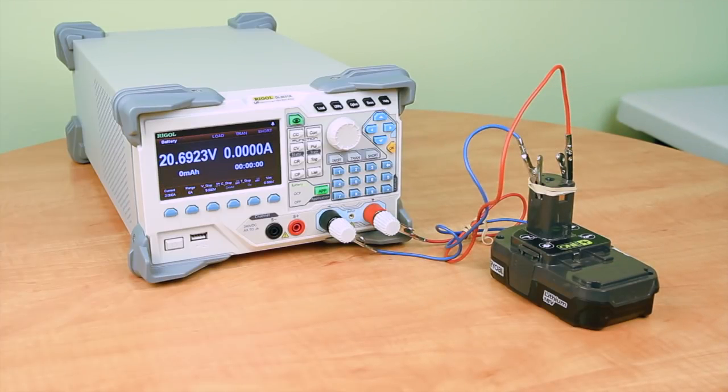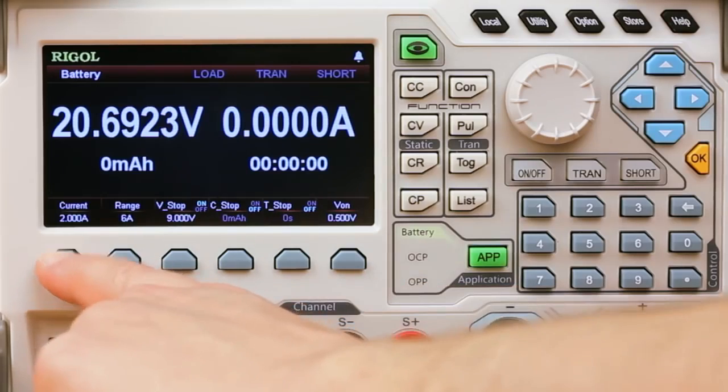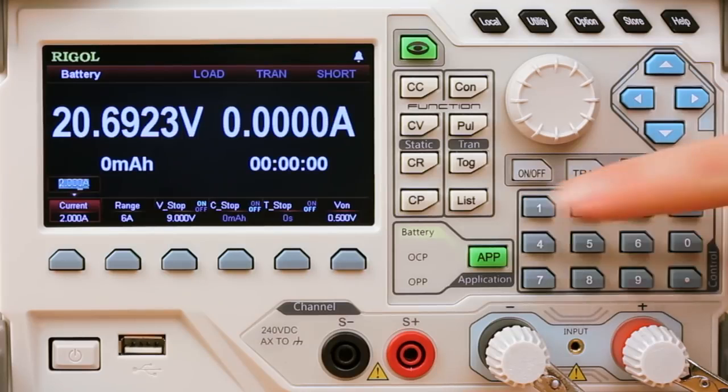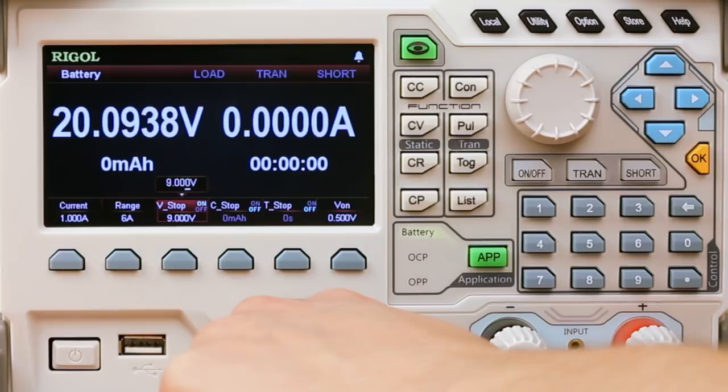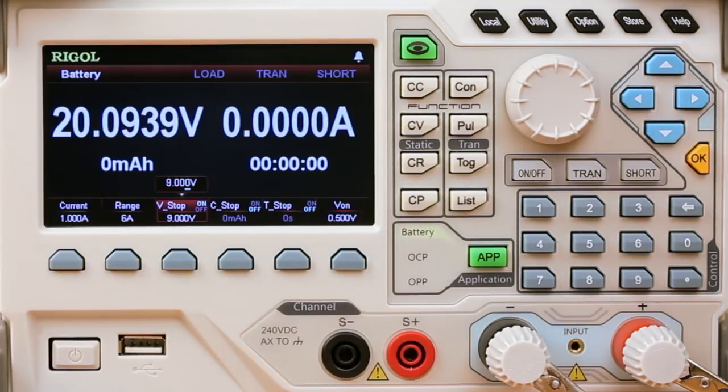We hit the app button and go into battery mode. Let's set the current for a 1 amp constant current pull. Here we're going to use the V-stop to stop our test. Pretty common on a battery test to stop it at roughly half the voltage of the normal battery voltage. Here we're going to set 9 volts for our 18 volt battery.